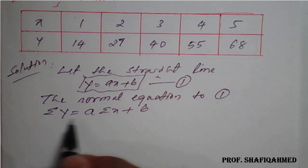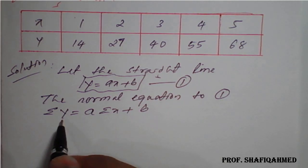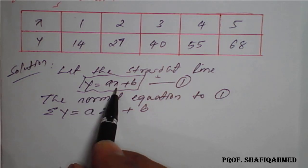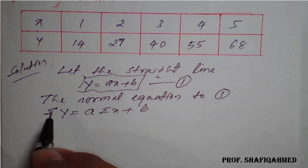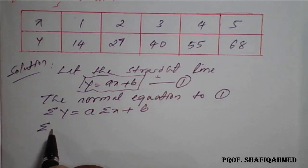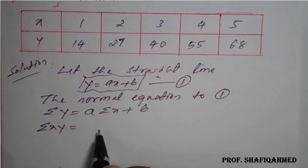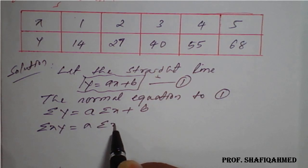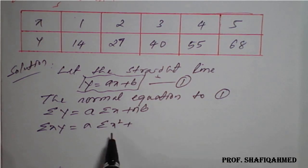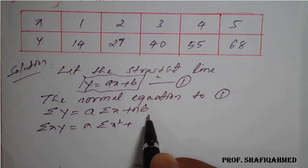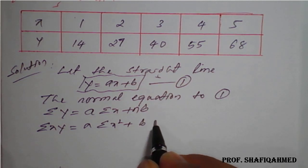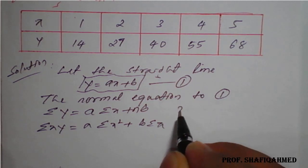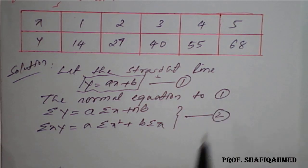Y is the dependent variable and X is the independent variable. We multiply the independent variable on both sides, so summation XY is equal to a times summation X square plus b times summation X. This is our equation number two.